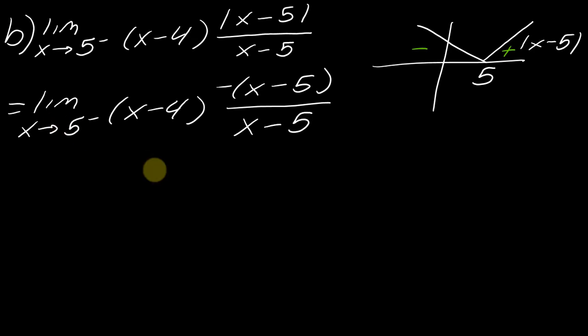So I put this negative here because I know I'm on the left side. So I can just go ahead and drop the absolute value and be more intentional about which part of the graph I'm on. So it's going to look like this. And now I can cancel out those X minus fives.